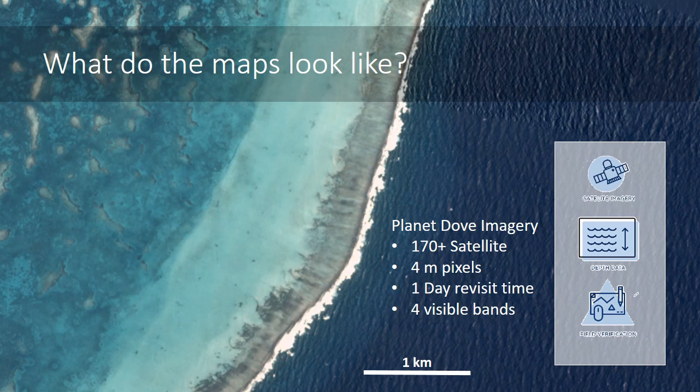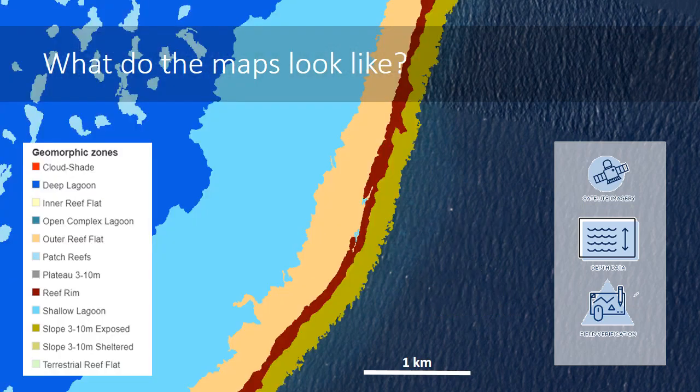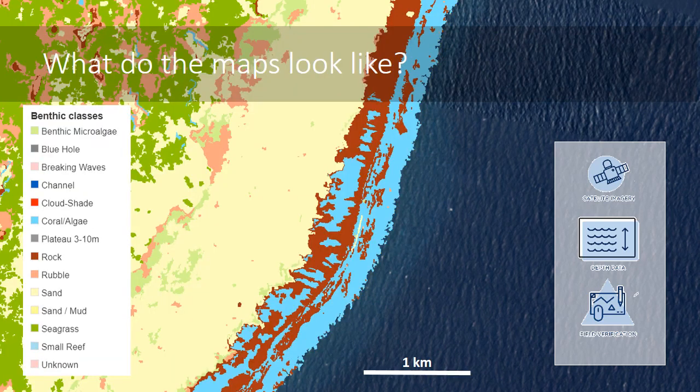The first step is using the Planet Dove satellite imagery, collected by 170 satellites that go around Earth's surface and cover every place on Earth every day. The pixels of these satellites are four meters, so you can recognize a reasonable boat but not a person walking or swimming on the reef. The satellite has four visible bands helping us differentiate features on the reef, such as geomorphic zonation — the different zones of a reef — or benthic composition, which provides detail on components like coral, algae, sand, muddy areas, and seagrass.